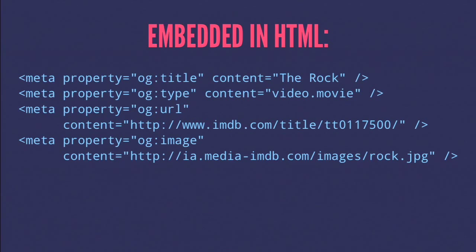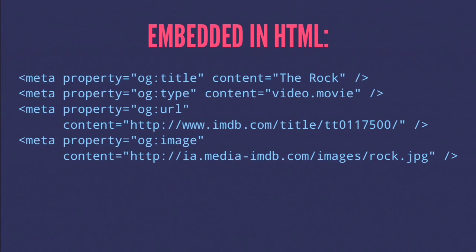This is what Open Graph looks like - a really simple example. It uses classic HTML meta tags with special 'og' type properties. There are a few required ones and dozens of optional ones. This is the reason why when you share something on Facebook, it doesn't just look like a link - it ends up looking like a nice little formatted box with a title, description, and maybe a playable video player.